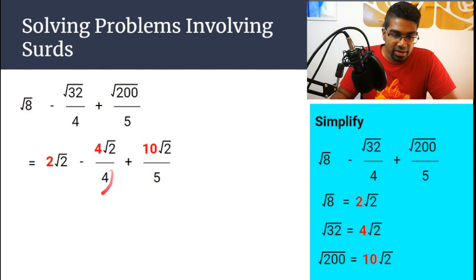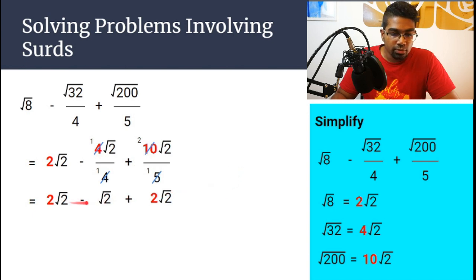Now we can simplify this. Look at the fractions. So here we have 4 over 4 and 10 over 5. So 4 and 4, both you can divide by 4, we get 1 and 1. 10 and 5, both you can divide by 5, so we get 2 and 1. This will become 2 surd 2 minus surd 2 plus 2 surd 2.